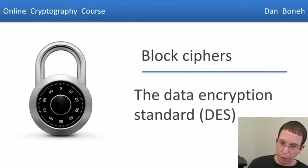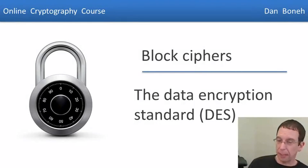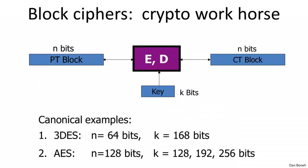Now that we understand what block ciphers are, let's look at a classic example called the Data Encryption Standard. As a quick reminder, block ciphers basically map n bits of input to n bits of output. We talked about two canonical examples: Triple DES and AES. In this segment we're going to talk about DES, and we'll talk about Triple DES in the next segment.